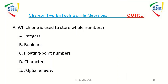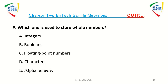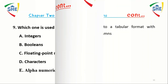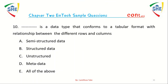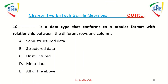Question number 9: Which one is used to store whole numbers? A) Integers, B) Booleans, C) Floating point numbers, D) Characters, E) Alphanumeric. Question number 10: Dash is a data type that conforms to tabular format with relationships between different rows and columns.